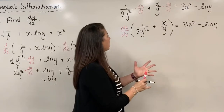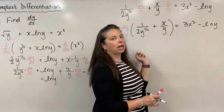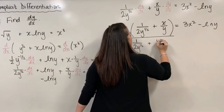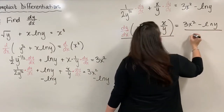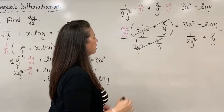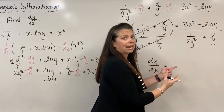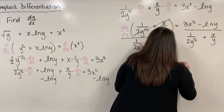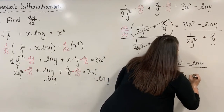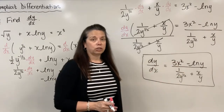We're almost done. To isolate dy/dx, we divide both sides by the parenthetical expression: 1 over 2y to the one-half plus x over y. On the left side those factors cancel out, and we are left with dy/dx equals 3x squared minus natural log of y, all divided by 1 over 2y to the one-half plus x over y. That's our final answer from implicit differentiation.